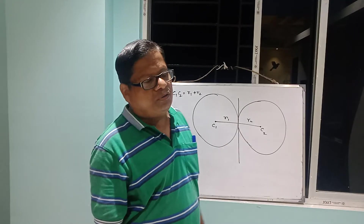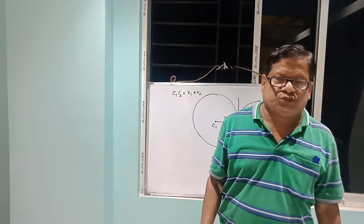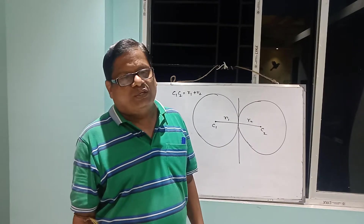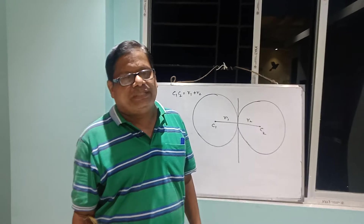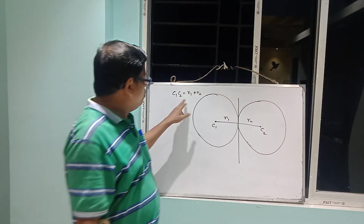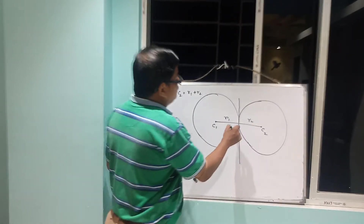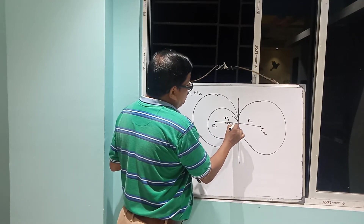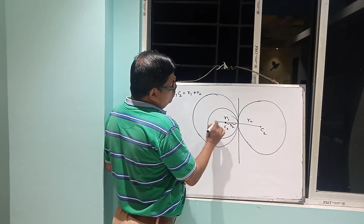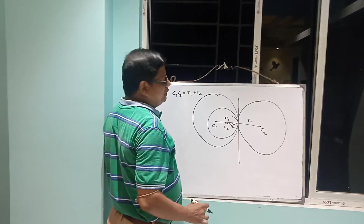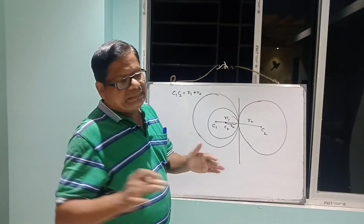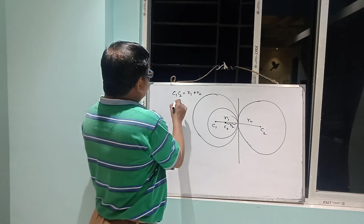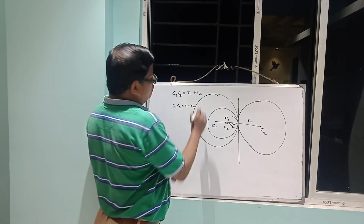The distance between two centers is √[(x₂−x₁)² + (y₂−y₁)²]. So C₁C₂ = r₁ + r₂ for external tangency. If two circles touch each other internally, then C₁C₂ = r₁ − r₂ (or r₂ − r₁).